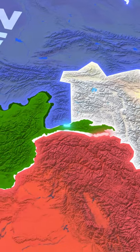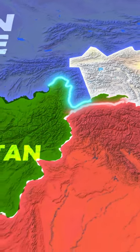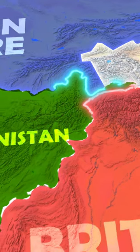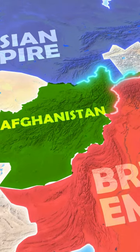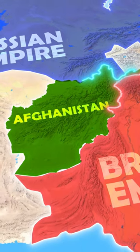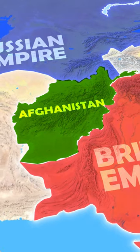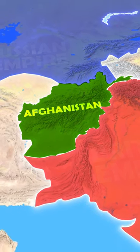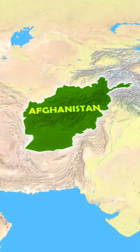The British drew their border at the Durand Line, and the Russians drew their border at the Panj and Pamir rivers. And eventually, both empires fell, leaving the border to exist till this day.